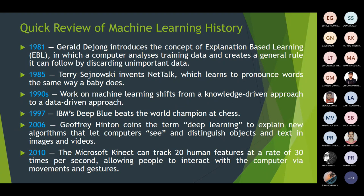In the year 2006, Geoffrey Hinton coined the term Deep Learning to explain new algorithms that let computers see and distinguish objects and text in images and videos. These neural network-based algorithms are used to distinguish objects and text found in images and videos.